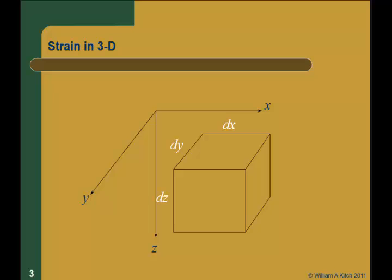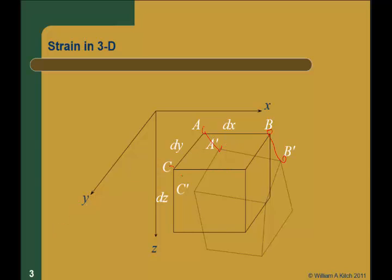Here's our elemental area, dx by dy by dz. I'm going to call these three points at these three corners A, B, and C. So A is this corner at that point and B is that point there, because we're going to move them around. So when I apply stresses to this element and it deforms, it's potentially going to both translate and deform. Point A moves from here to A prime, point B moves from there to B prime, C there to C prime.